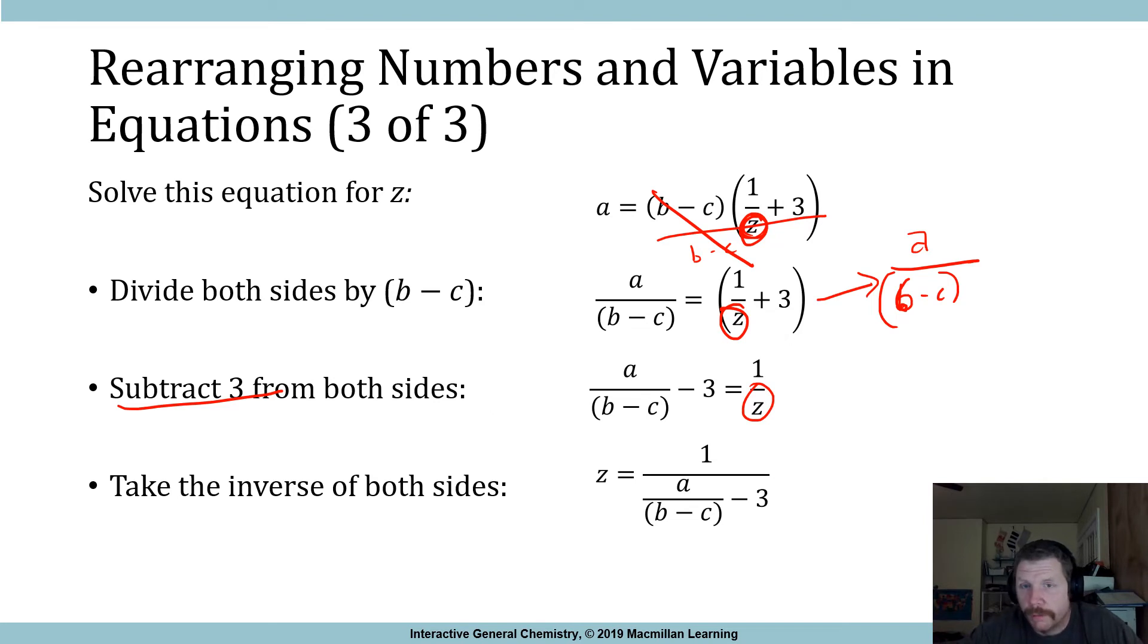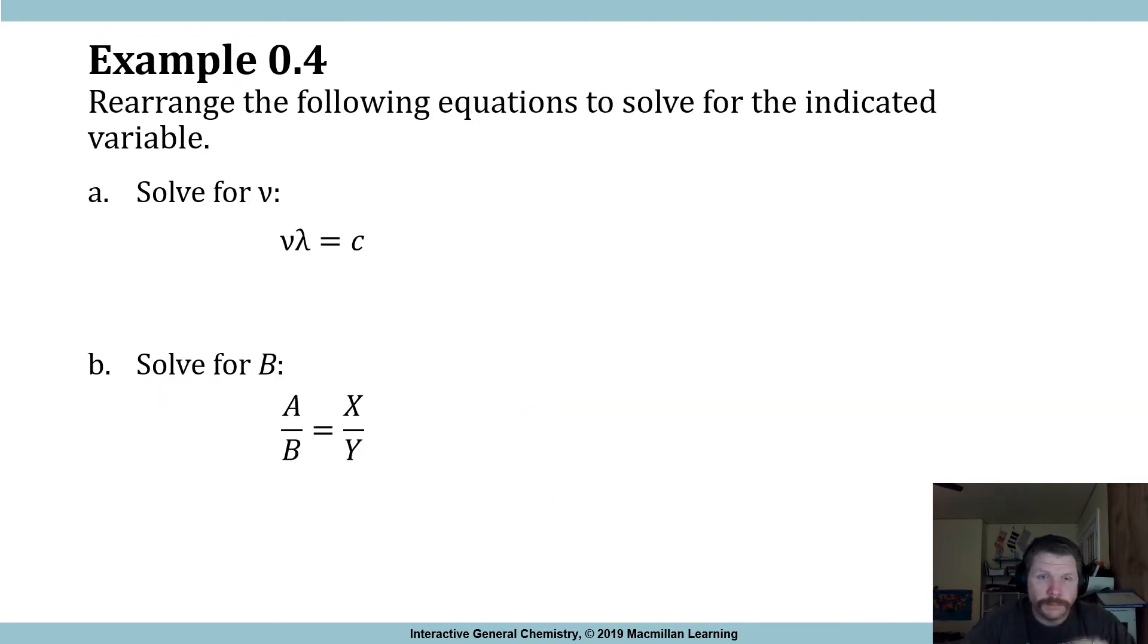So now all that we have to do is what we did in part 2 of 3, where we take this thing that we want to solve for that's in the denominator and put it in the numerator by inverting everything, by flipping everything. And so that gives us, well, 1 over z when you invert that, that's z over 1 or z alone. And then we've got 1 over a over b minus c minus 3, and that gives us that right there. Okay, so perfect, fantastic.